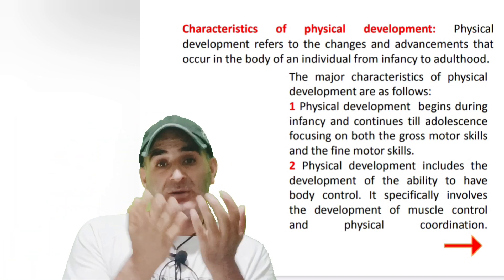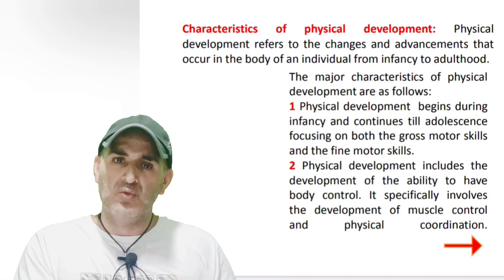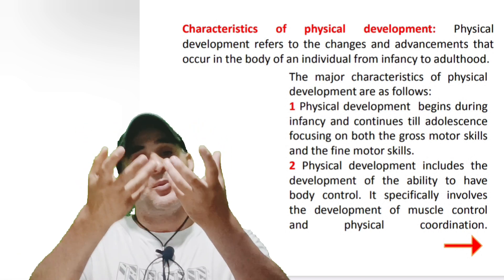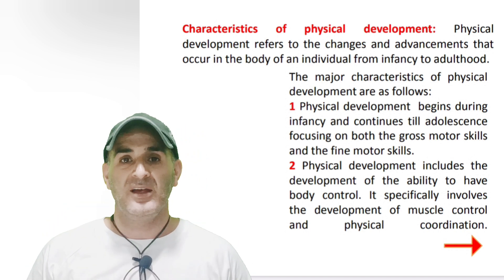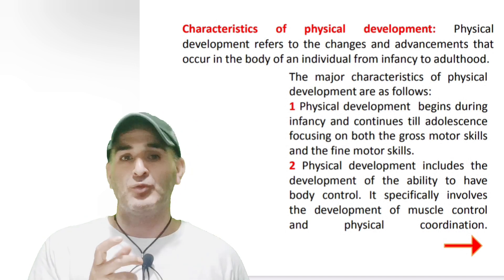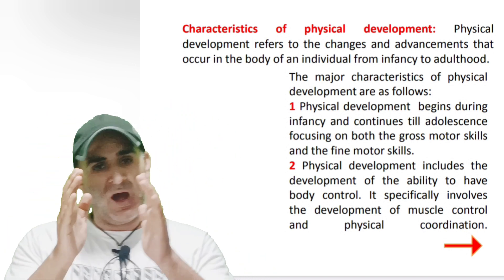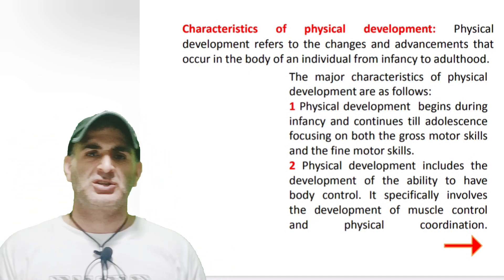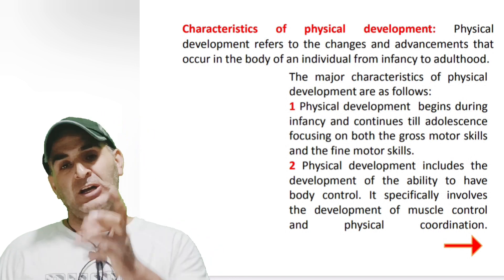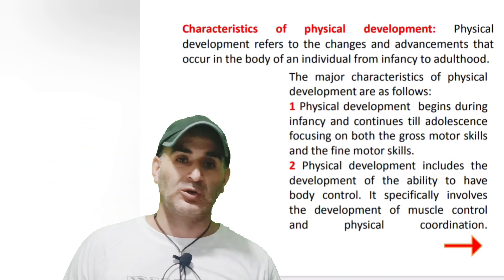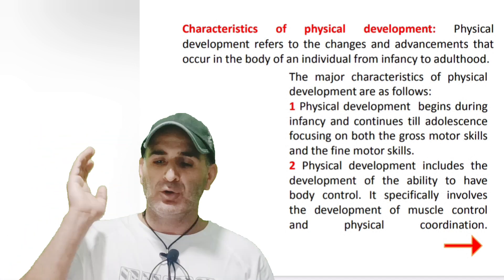Fine motor skill development, on the other hand, means when an individual is able to rotate or move a small portion or part of the body — for example, rotation of the wrist. That comes in the domain of fine motor skill development. Number two: Physical development includes the development of the ability to have body control.